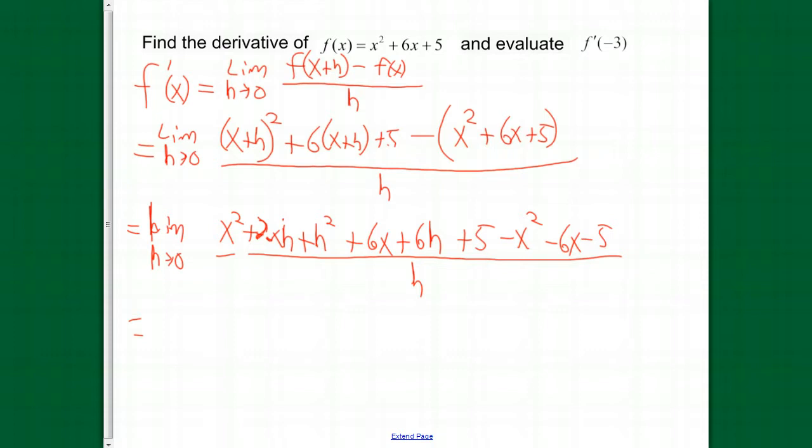We're going to have some like terms here. x squared minus x squared. 6x minus 6x plus 5 minus 5. Those all cancel each other out. So, now, we're looking at the limit as h approaches 0 of 2xh plus h squared plus 6h. All of this is over h.